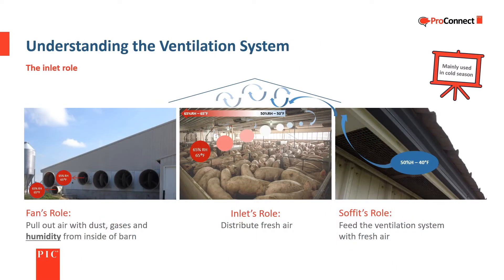Power ventilated barns have three main parts to the ventilation system: fans to move out the air carrying dust, moisture, and gases; inlets that distribute the fresh air that the fans are pulling into the barn; and the soffit and attic vents that allow fresh air to enter the attic so it is available to the inlets. Soffits and attic vents need to be cleaned so air flow isn't restricted to the inlets.